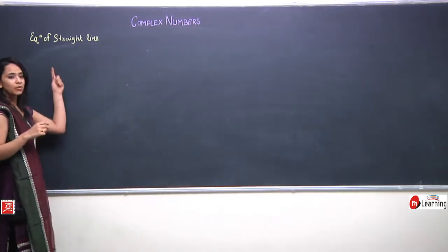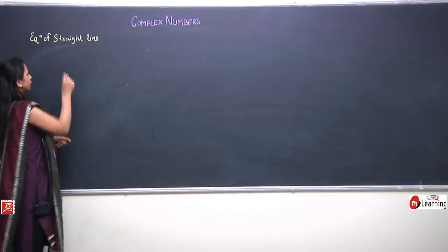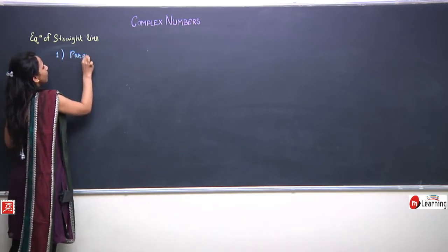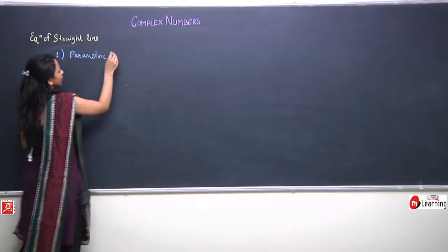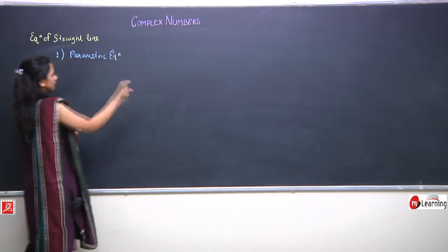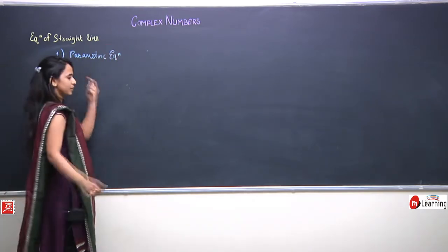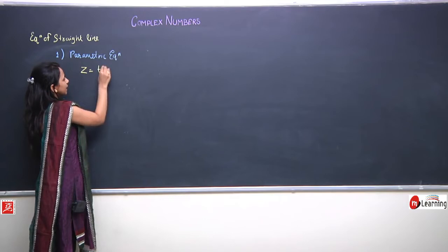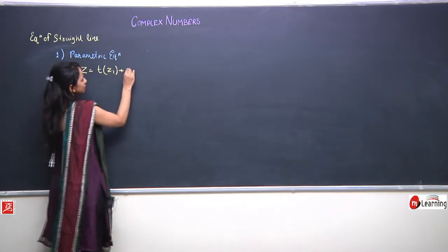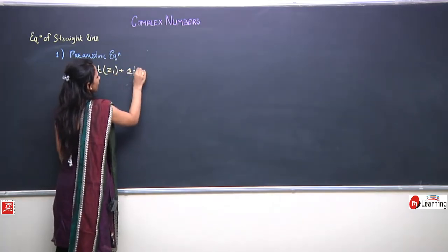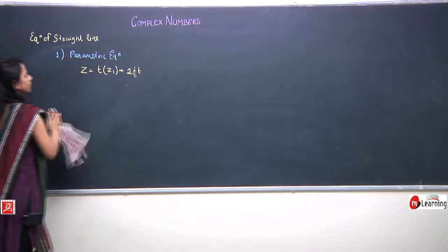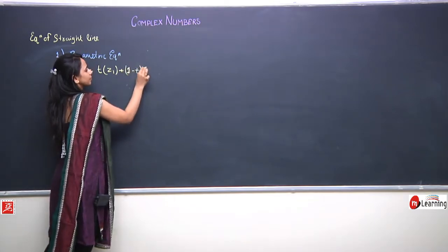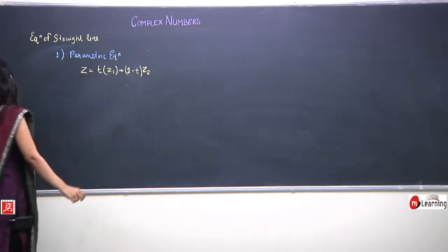Let us first try to write the parametric equation for a straight line in terms of parameter t. The parametric equation of a straight line is given by z = t·z1 + (1 - t)·z2. Let us try to prove this equation.